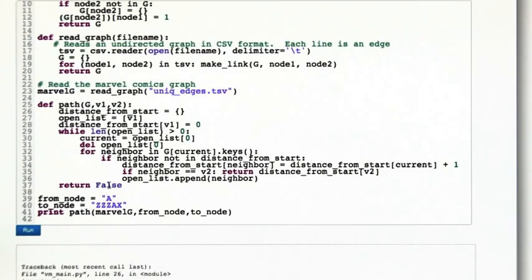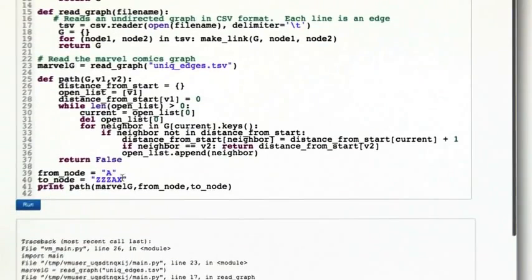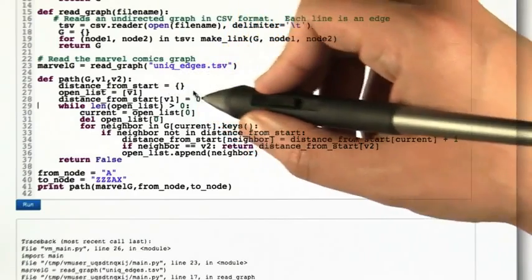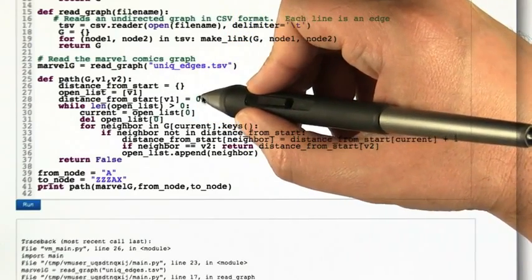This could also be infinity, which indicates that there is no bound on the length of the shortest path. It's infinitely large. In this particular case, I'm running it with finding the path from a comic book character called A to one called ZZZX. I figured that was pretty comprehensive if we go from A to ZZZX. And it's a three or four step chain that you get when you do this with the data that we've got.